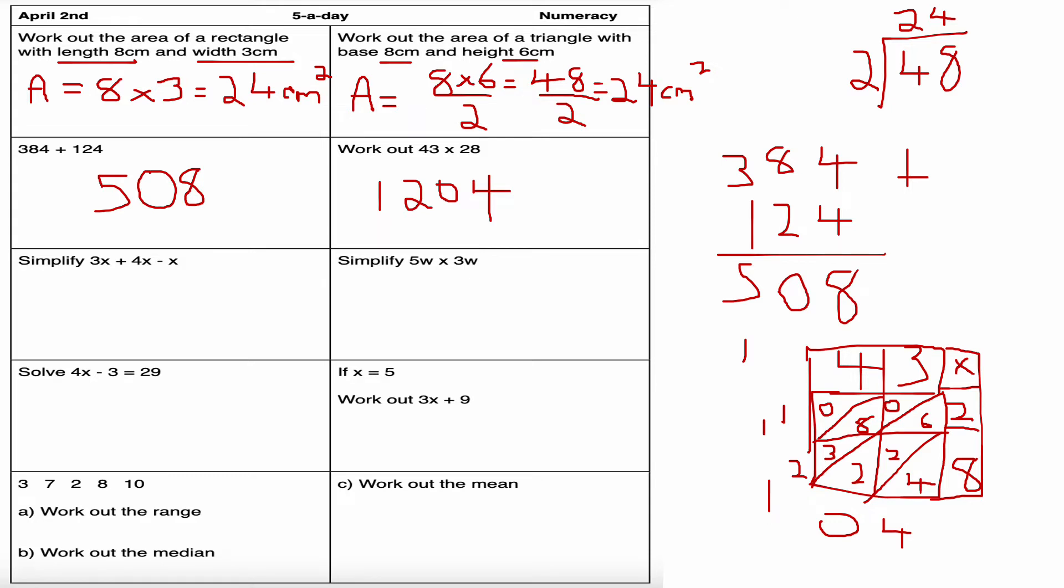This is what I call the Chinese lattice method. I've seen this before and I really like this method. You are welcome to do it the traditional way of column multiplication or even the box method of times 40 by 20, 40 by 8, 3 by 20, and then 3 by 8, and then add your answers together. Any method is fine.